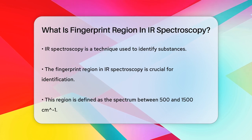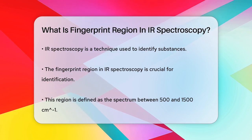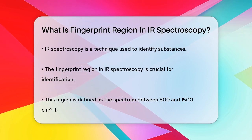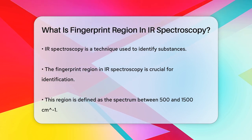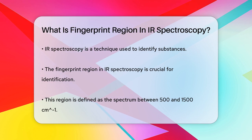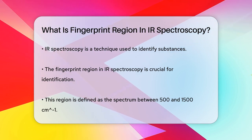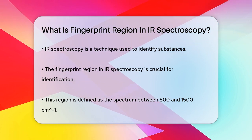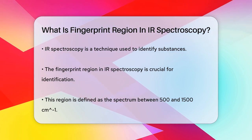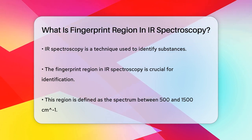When you look at an IR spectrum, you'll see a graph with various peaks and troughs. These peaks and troughs represent different frequencies of infrared radiation that are absorbed by the molecule.